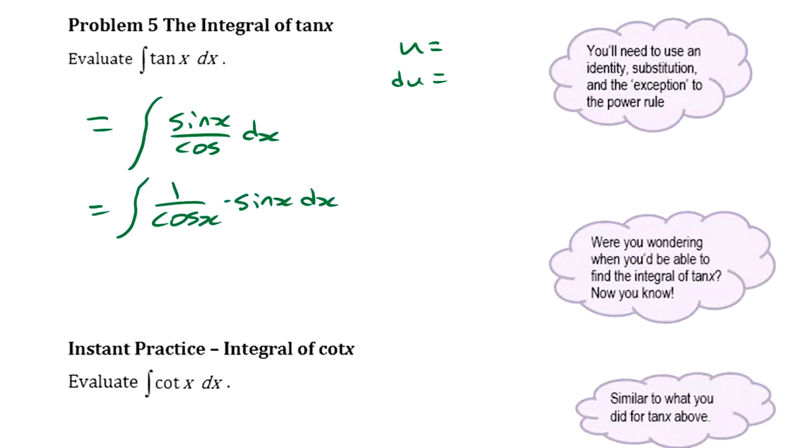My other choice is to make cosine into u, which is what I'm going to do because that's the one that works. If u equals cos x, then du equals minus sine x dx.